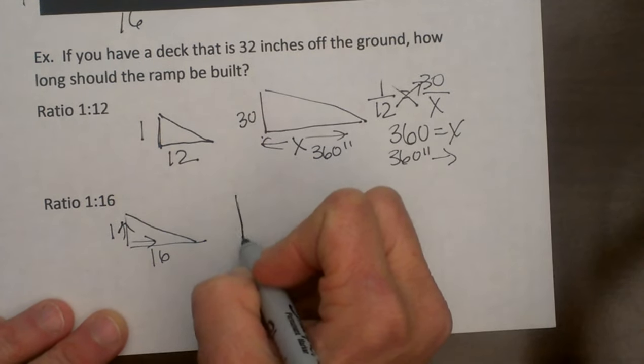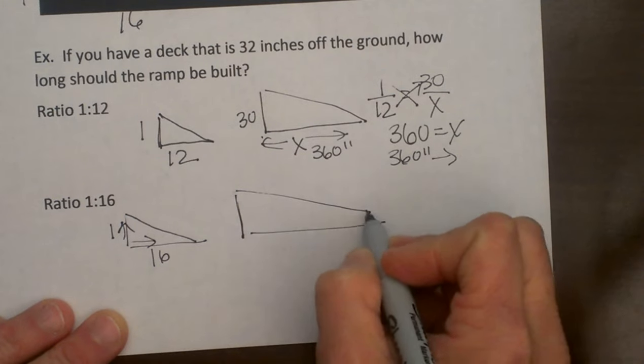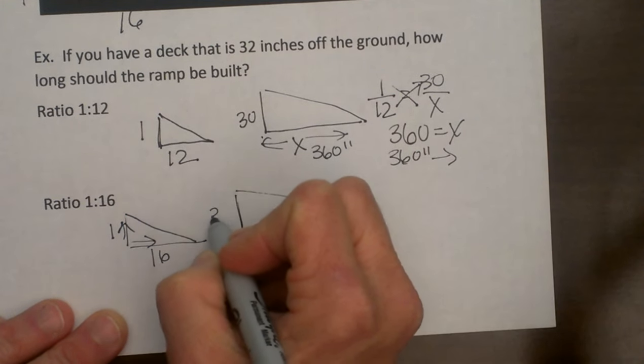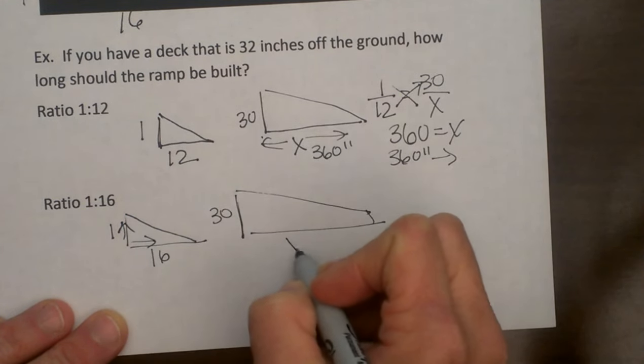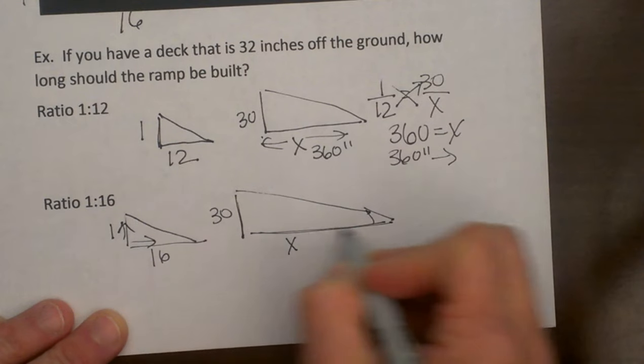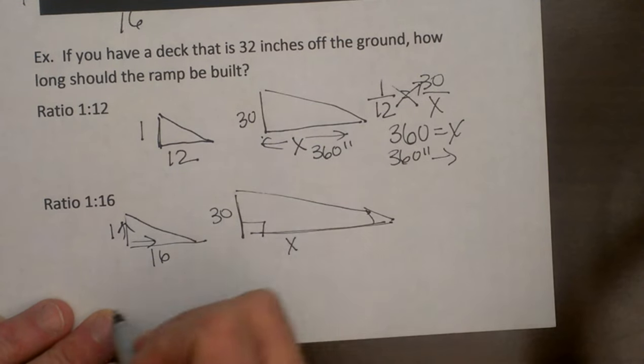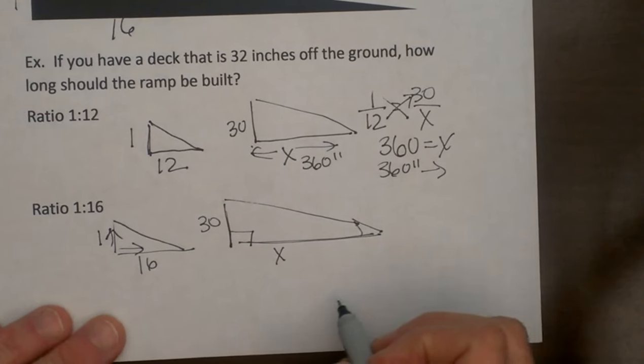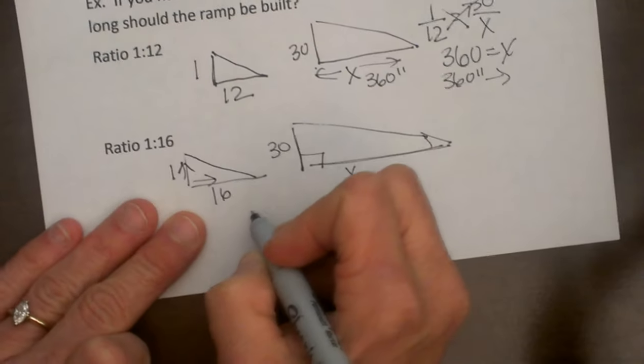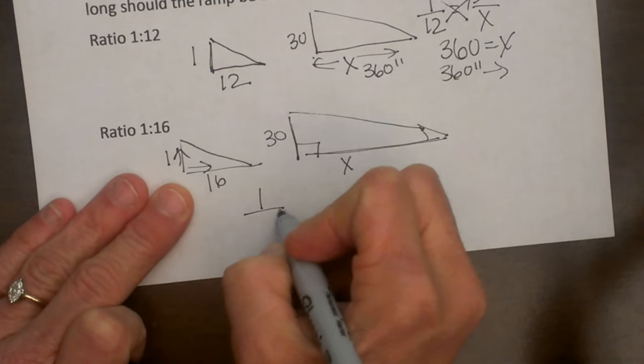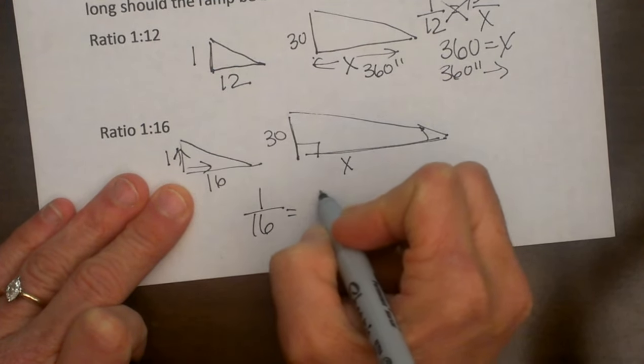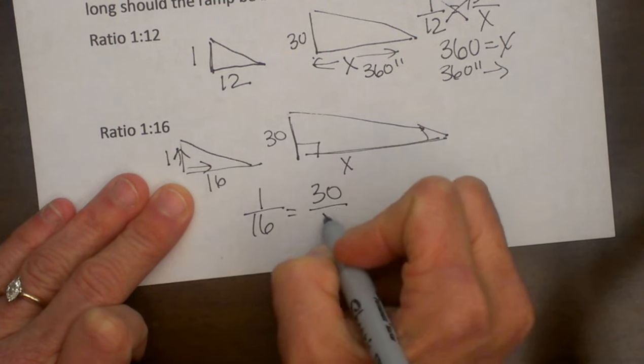The same height for my deck is still 30 inches tall and the length is still unknown. We do not know how long it needs to be. Now let's set up a proportion. So this one is going to be 1 to 16 is equal to 30 is to x.